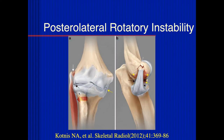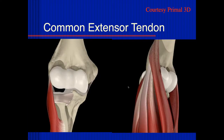Posterior lateral rotatory instability: typical injuries are avulsion injuries of the common extensor tendon as well as injuries to the lateral collateral ligaments. Looking at the anatomy beyond the deep ligament structures, we have the supinator muscle attaching to the radius helping in supination of the forearm, and then the common extensor tendons — there are three of them.